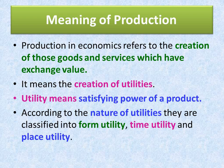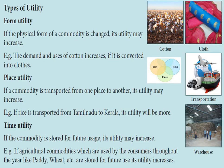There are three different types of utility: form utility, place utility, and time utility. Form utility: once you change the form of a commodity, its utility may increase. Place utility: when you transport a commodity or move it from one place to another, its utility increases. Time utility: when you store a product for some time and later release it in the market, its utility increases.